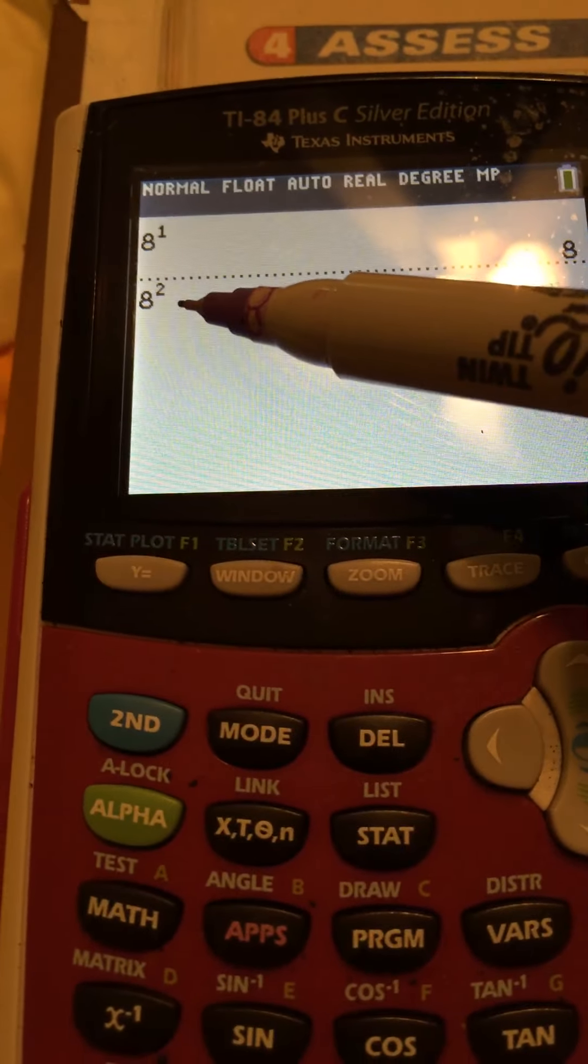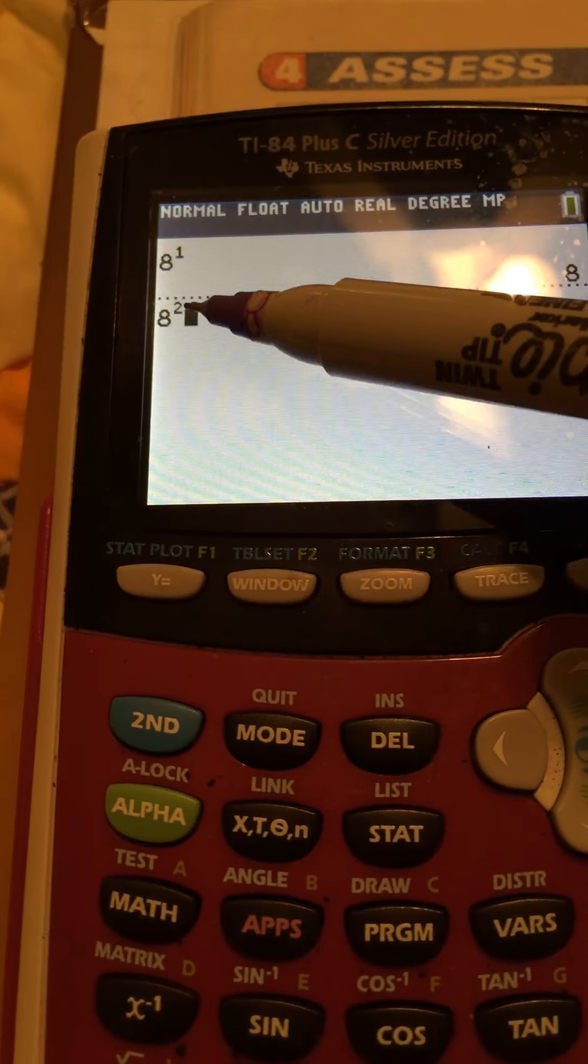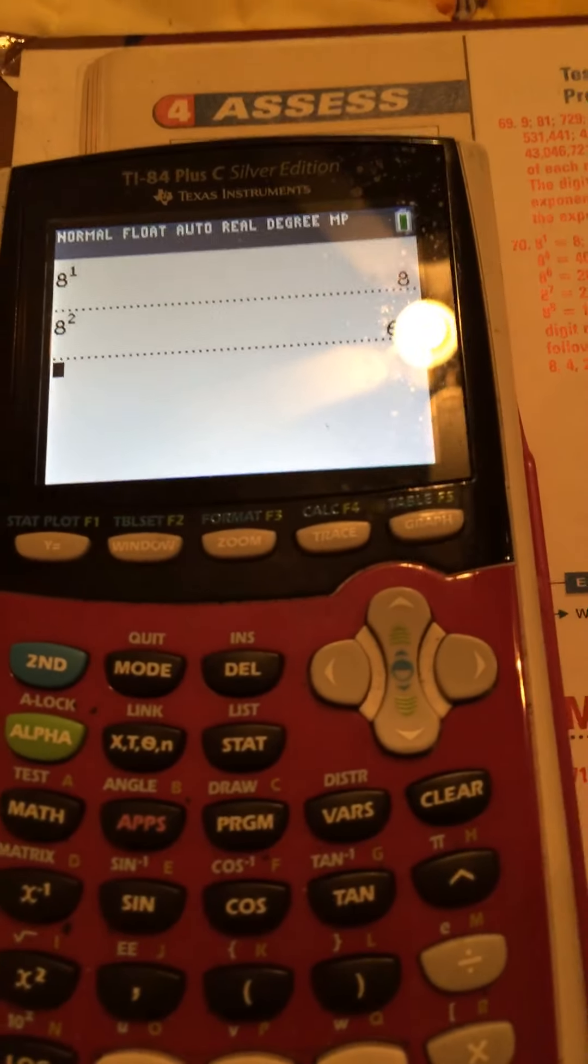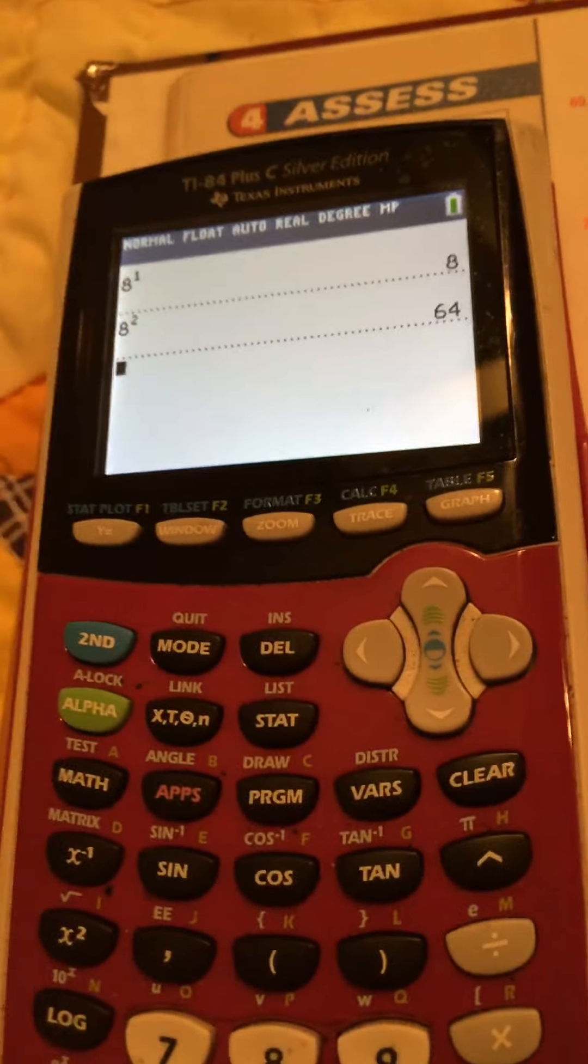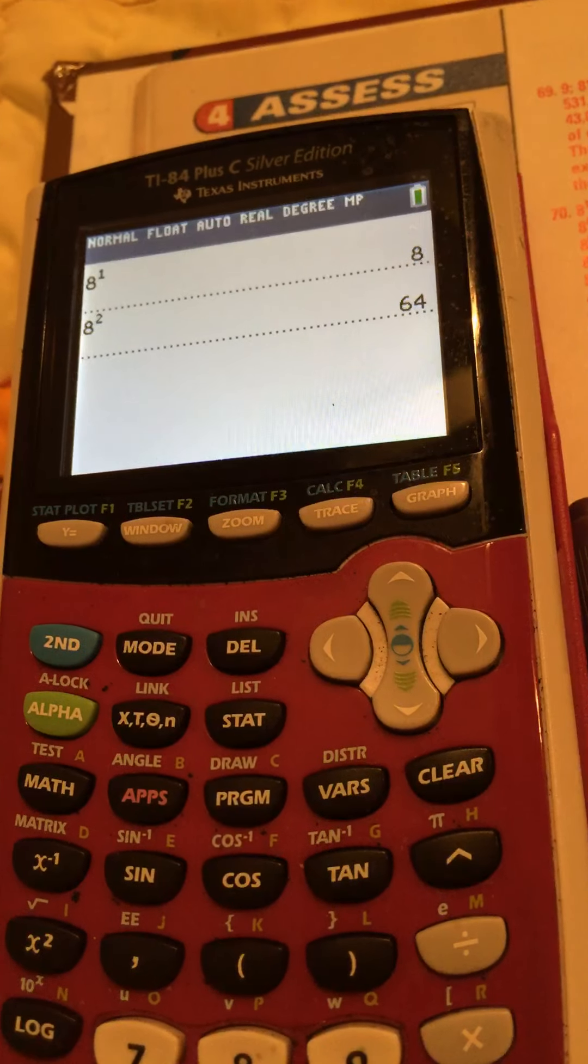And a lot of times I've seen kids miss problems because they were what I call up in exponent land. Okay, so now let's hit enter and see what the answer is. Oops, let's get where it's not a glare. It is 64. So I'm writing that in my chart.